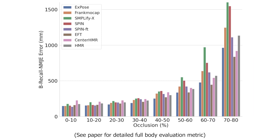To account for misses and encourage the field to come up with methods to deal with occlusion, we normalize the average joint error by the percentage of correctly detected people and call it NMJE for Normalized Mean Joint Error. Methods suffer under this new error measure if they produce a large number of misses. All current methods perform poorly on children.